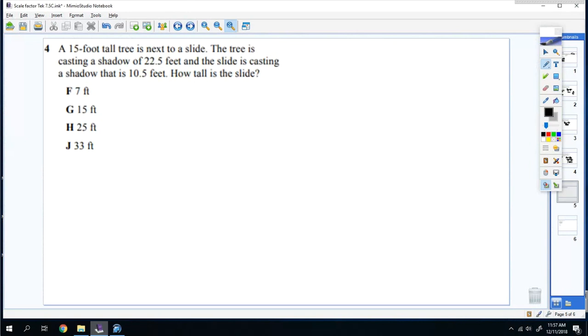Four. A 15 foot tall tree is next to the slide. The tree is casting a shadow of 22.5 feet and the slide is casting a shadow that's 10.5 feet. How tall is it? So I have a tree that's 15 feet tall and the shadow is 22.5 feet. And then I have a slide and I'm just going to draw it right here.